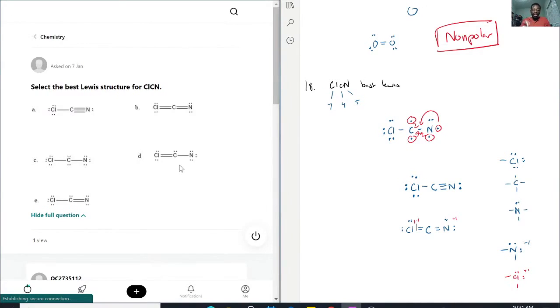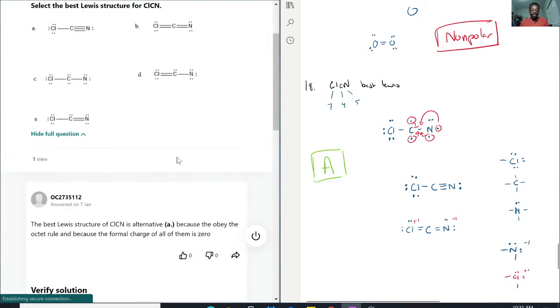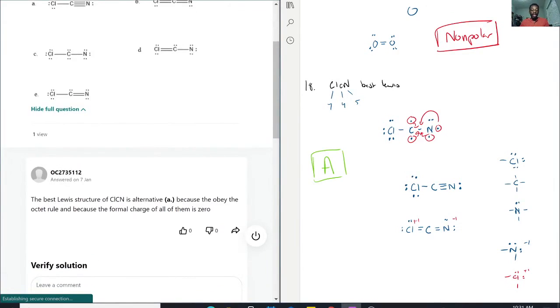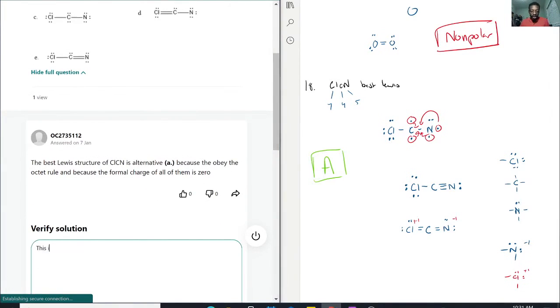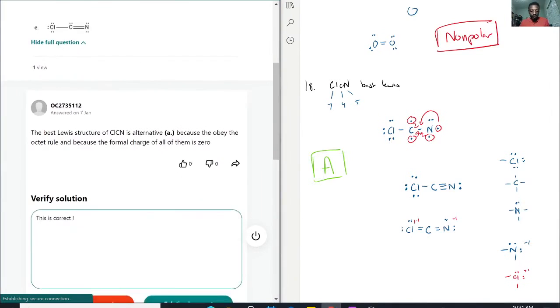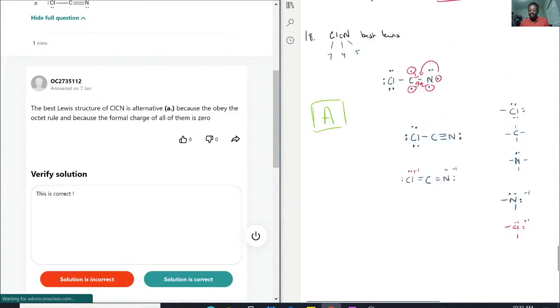And E, it's just like an inverse of D, and we already discovered that D had too many electrons. So A is the only viable choice here because this is the best Lewis structure we can draw from ClCN. The best Lewis structure is A because they obey the octet rule and the formal charges are all zero.